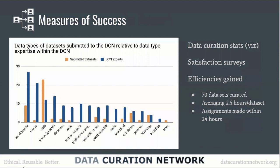Since we went live on January 1st of this year, 70 datasets have gone through the network. In our mapping — where orange is submitted datasets and blue is our expertise — we're seeing a lot more code than we have expertise for. One of our curators at Penn State, who has a lot of coding expertise, is seeing far more datasets than some of our other curators. Institutions aren't sending us their easy data; they're not sending us their Excel files.